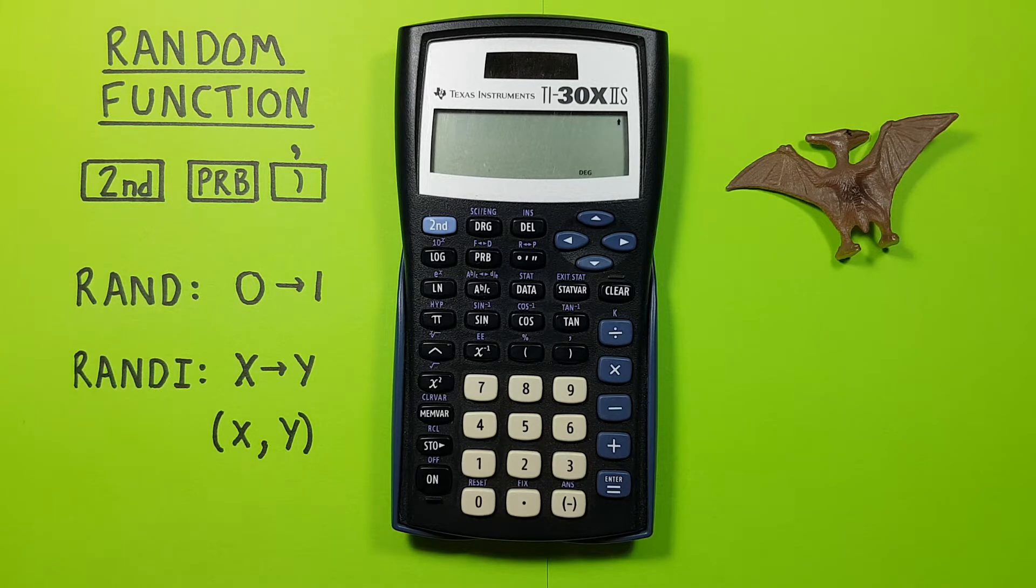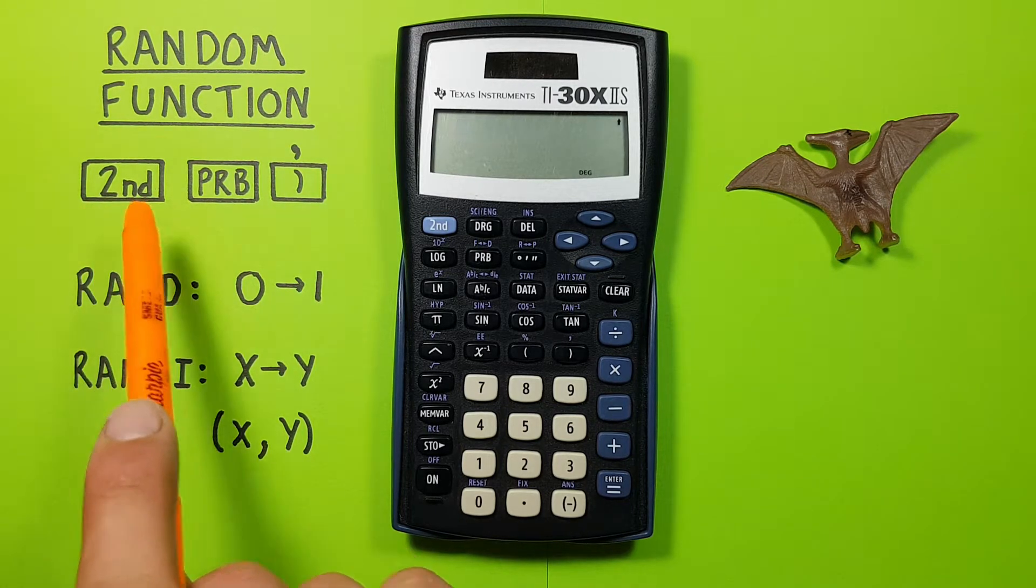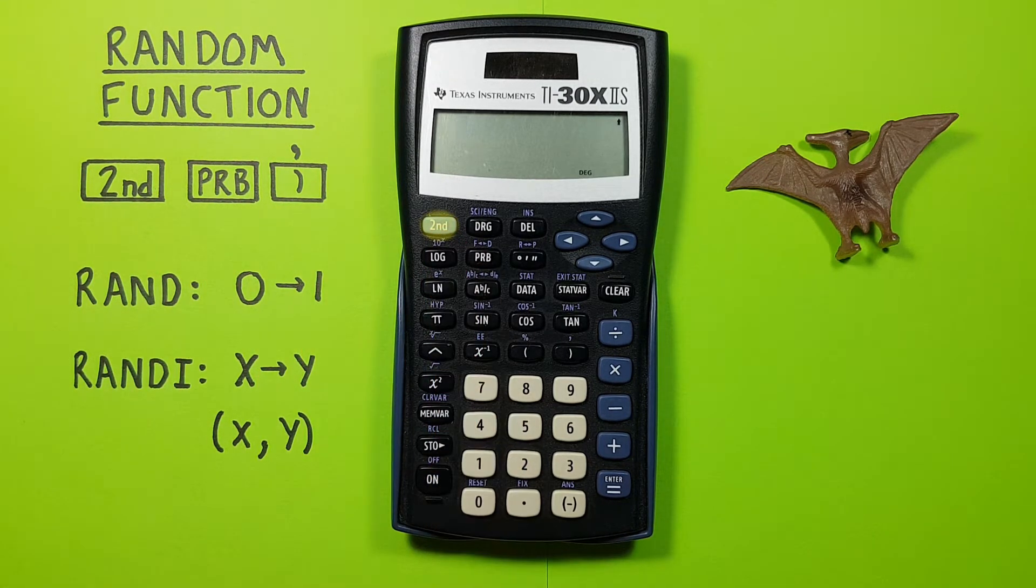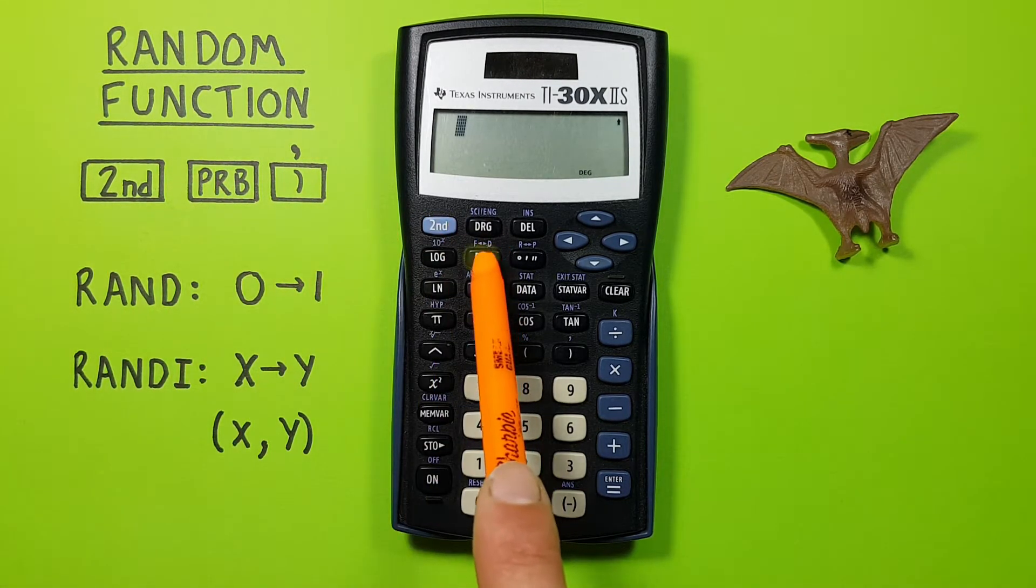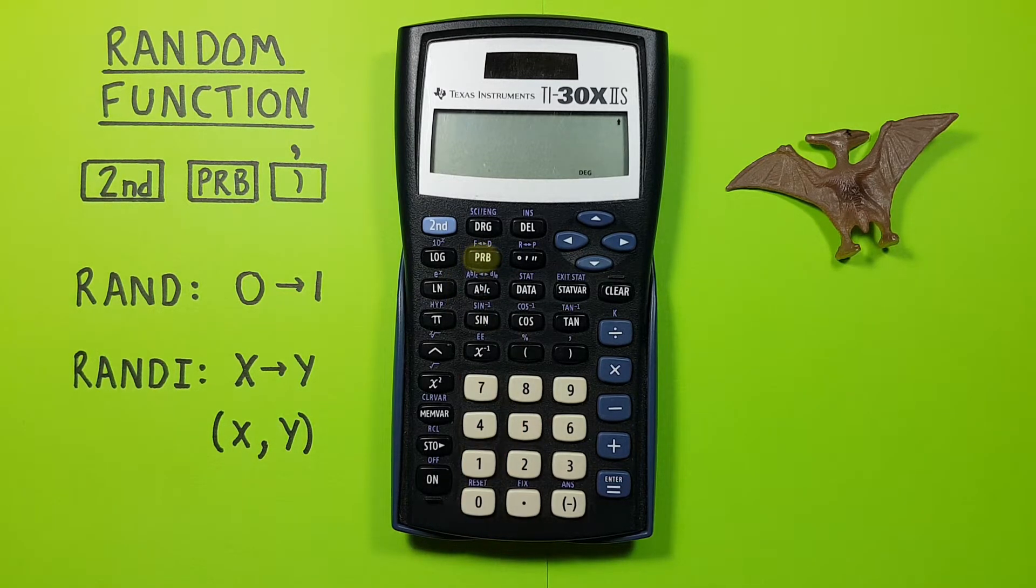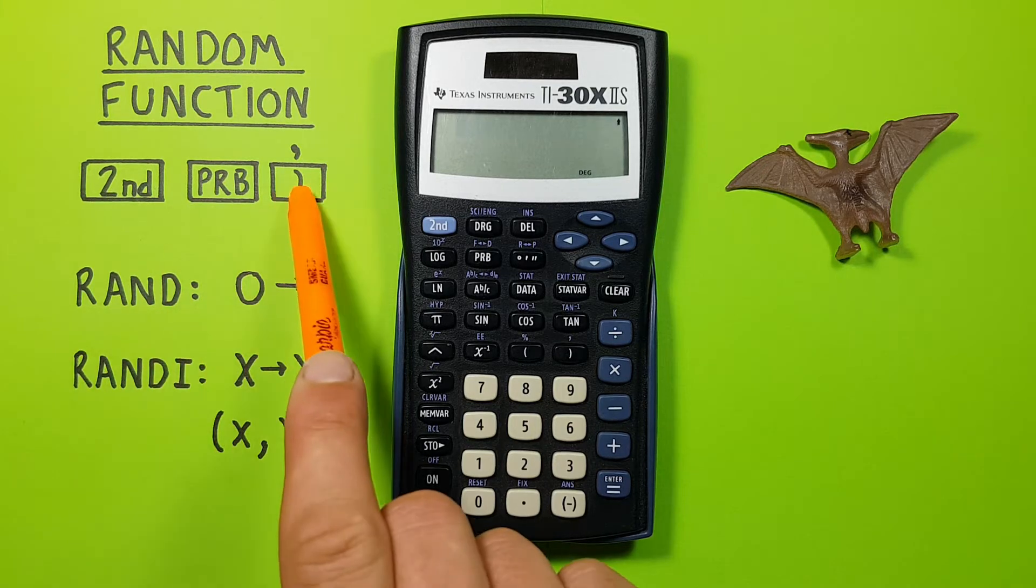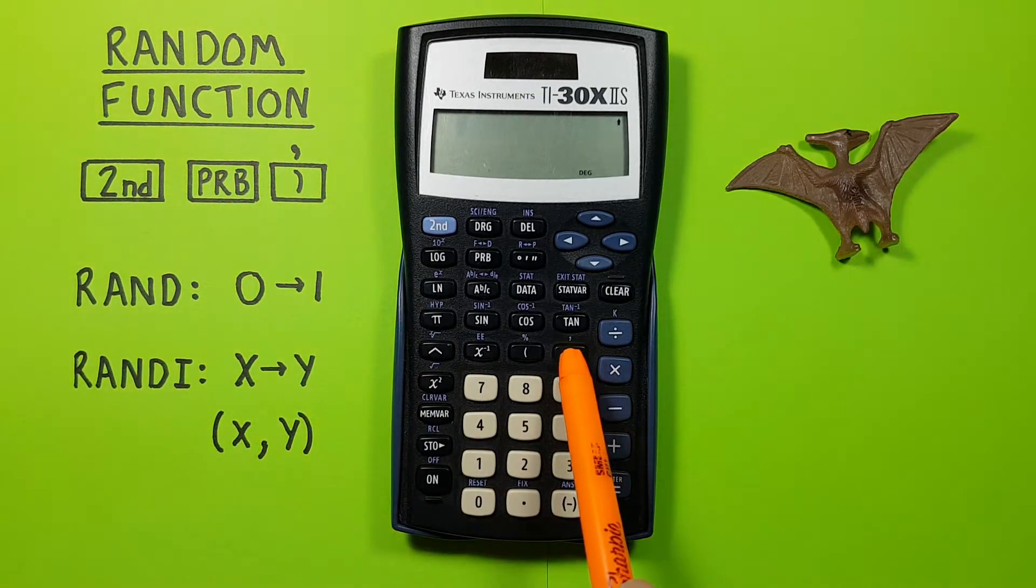To do this we'll be using the second function key that looks like this located here, the PRB or probability key that looks like this located here, and the right bracket key with the second function of a comma that looks like this located here.